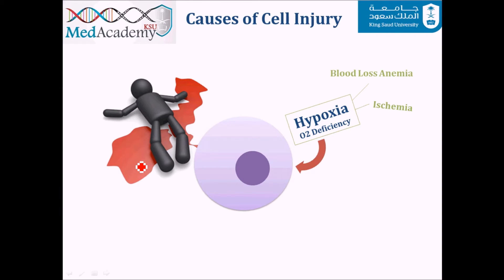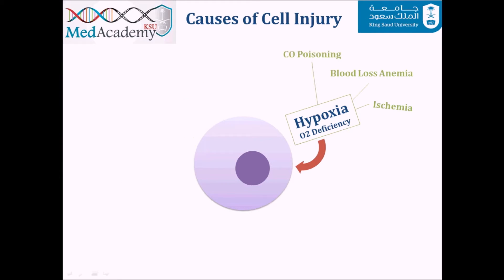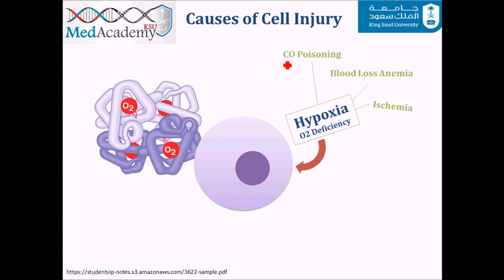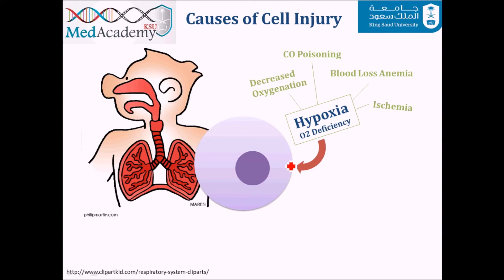Another cause of hypoxia is blood loss and anemia. Hemoglobin is the principal oxygen-carrying compound in our body; losing a lot of blood reduces oxygen-carrying capacity. A third example is carbon monoxide poisoning: carbon monoxide has a high affinity for hemoglobin and displaces oxygen, so cells have difficulty producing energy. Lastly, decreased oxygenation — mainly related to respiratory system causes — also leads to hypoxia.